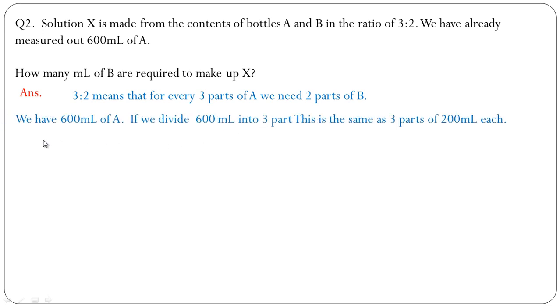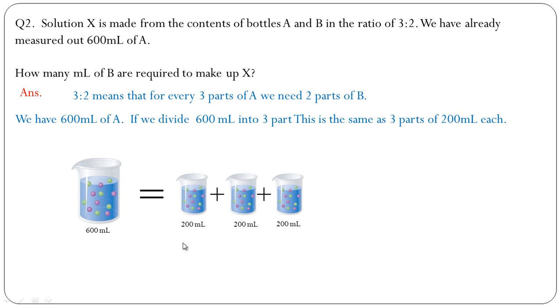We have 600 ml of A. If you divide 600 ml into 3 parts, each part is 200 ml. To make up the solution we need 2 parts of B, so we need to multiply 2 by 200 ml, that is 400 ml.